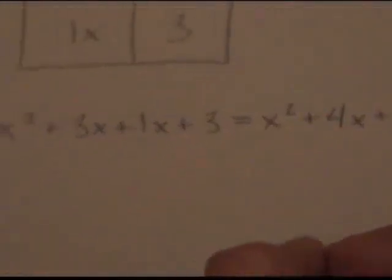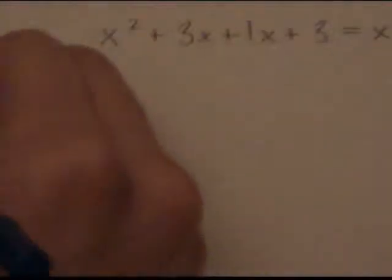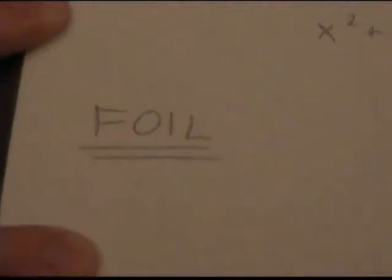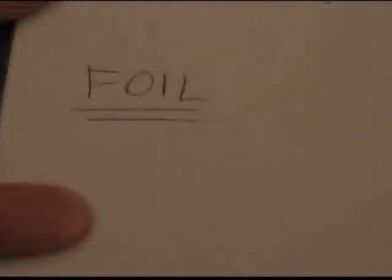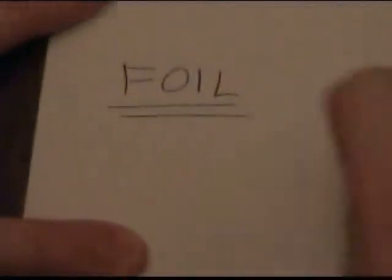Now we're going to move into the abstract portion of our lesson, which is the FOIL method. FOIL stands for First Outer Inner Last, and what you do is you take your two binomials and write them next to each other.